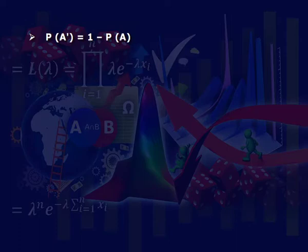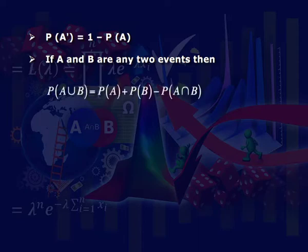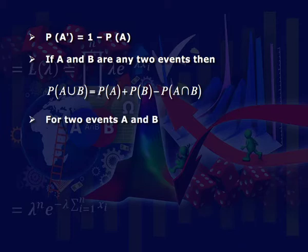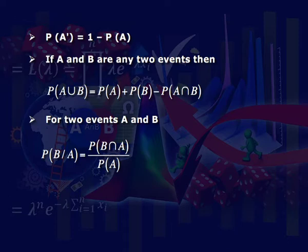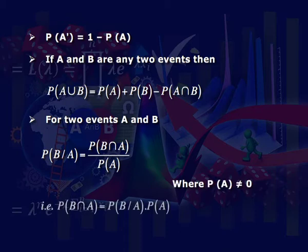In probability theory some theorems are used; their statements are as follows. First: P(A') = 1 − P(A). Second: if A and B are any two events, then P(A ∪ B) = P(A) + P(B) − P(A ∩ B). For two events A and B: P(B|A) = P(B ∩ A) / P(A), where P(A) should not be 0. That is, P(B ∩ A) = P(B|A) × P(A).